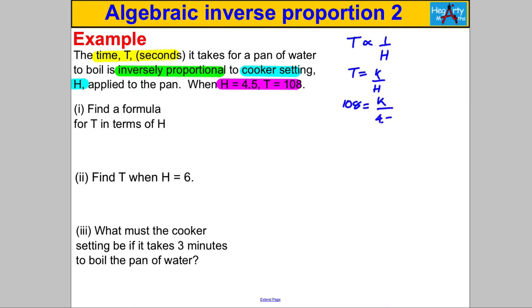To work out K, K would therefore be equal to 108 multiplied by 4.5. You're allowed to go away and work that one out, and you would have got 486. Then lastly you finish off by writing your formula: therefore T is 486 divided by H. That's the formula we're going to use for part 2 and part 3.